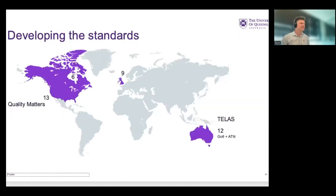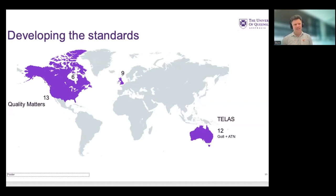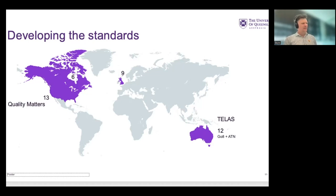When developing the standards, we had an incredible scan across different universities and what was happening around the world — I have to acknowledge Emma as leading that work. We explored standards across Canada, the US, the UK, and Australasia. We also looked at Quality Matters and other standards out there. When put on a map, it showed a certain bias that we have at our university. We realised there wasn't something quite right for UQ — we wanted to bring in a range of local ideas including our higher education learning framework and policy.